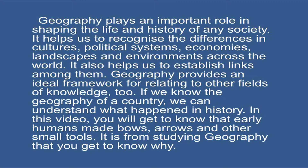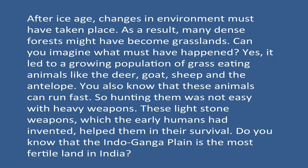Geography provides an ideal framework for relating to other fields of knowledge. If we know the geography of a country, we can understand what happened in history. For example, early humans made bows, arrows and other small tools. After the ice age, changes in environment took place — many dense forests might have become grasslands. This led to a growing population of grass-eating animals like deer, goat, sheep and antelope. Since these animals can run fast, hunting them was not easy with heavy weapons, so light stone weapons helped early humans in their survival.